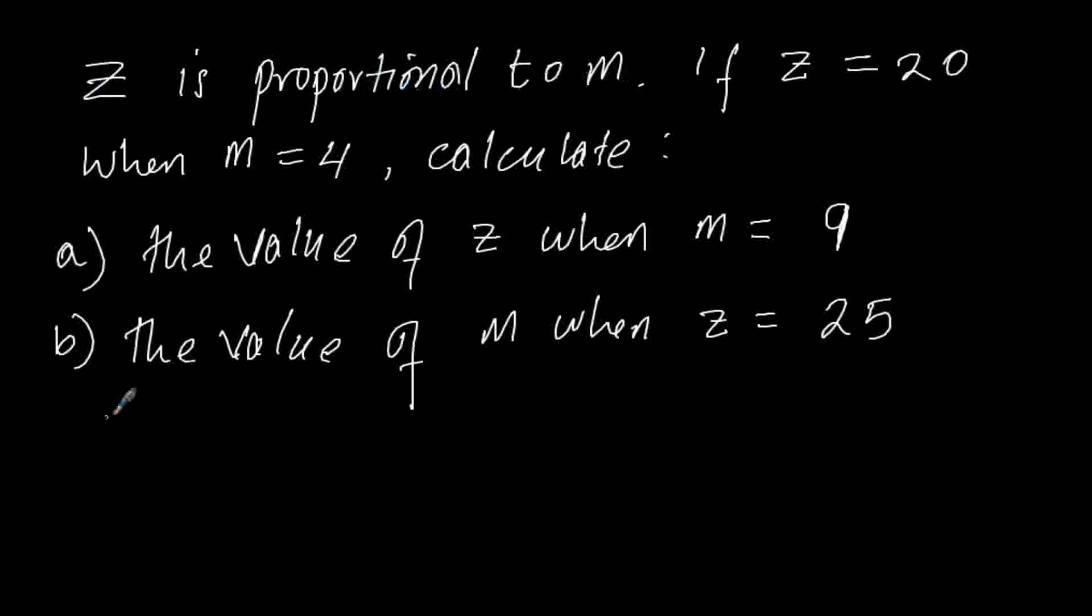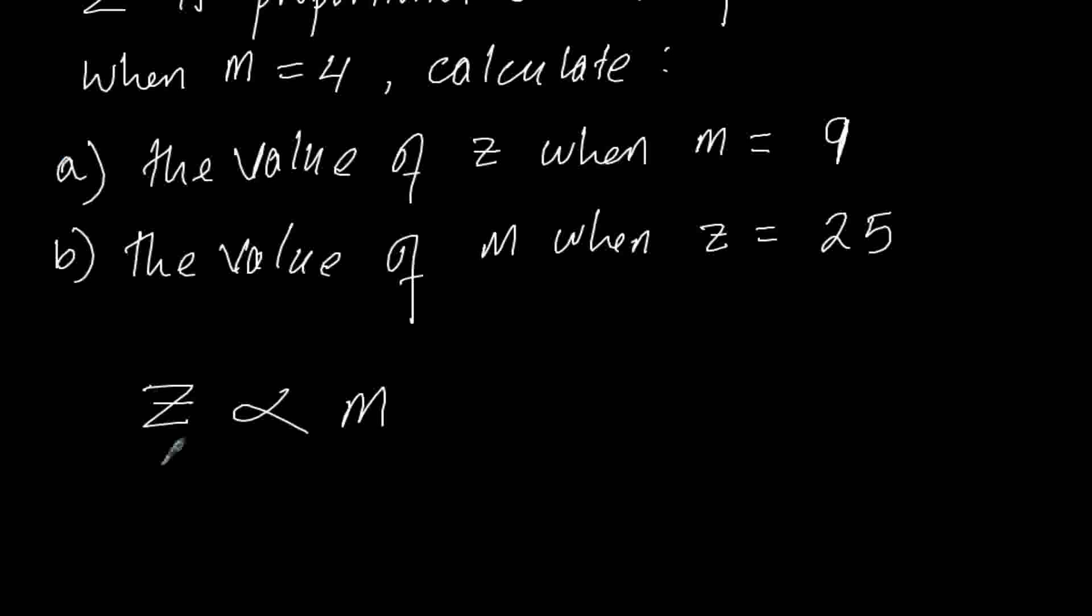Z is proportional to M. It can also be stated that Z is directly proportional to M, or Z varies as M - these all mean the same. So this will be Z is proportional to M, this is the symbol of proportionality. When we remove that symbol, we replace it with a constant of proportionality which we can call K.